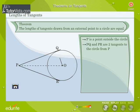Join OP, OQ, OR. Proof: We know that the tangent at a point of a circle is perpendicular to the radius through the point of contact. So, PQ is perpendicular to OQ and PR is perpendicular to OR.